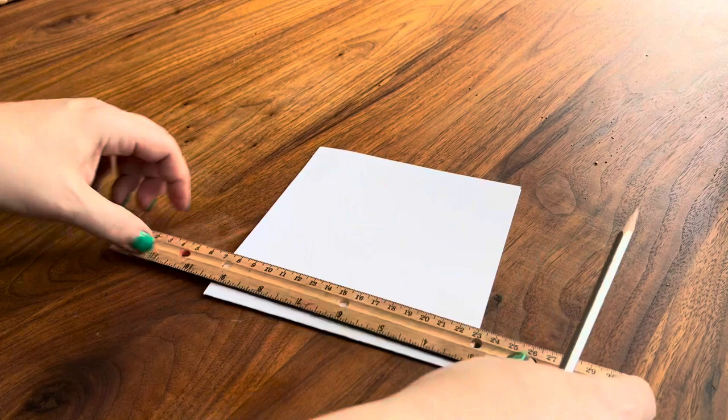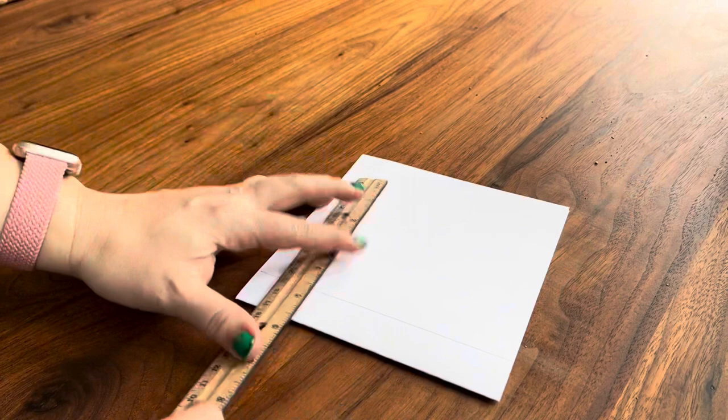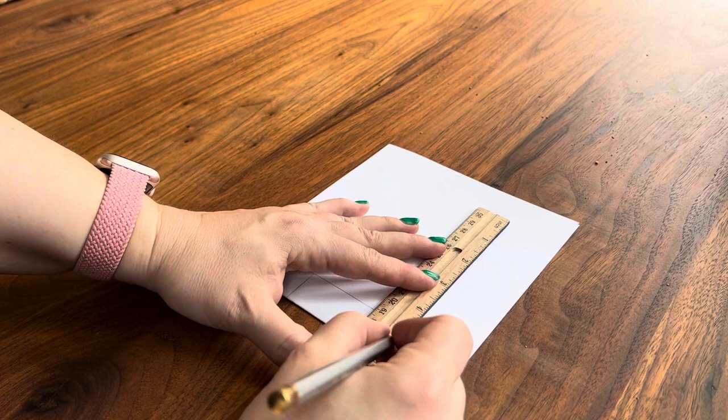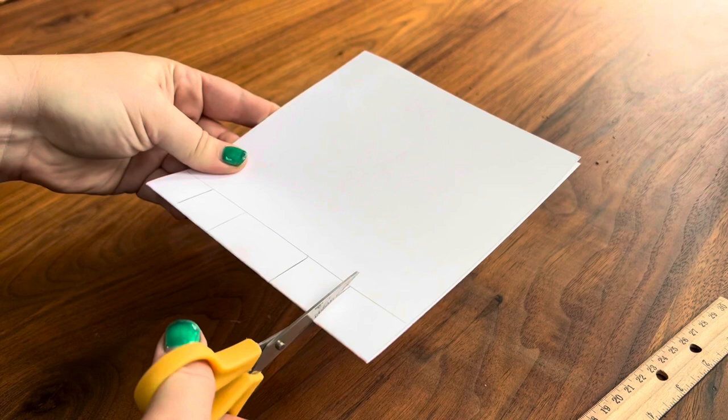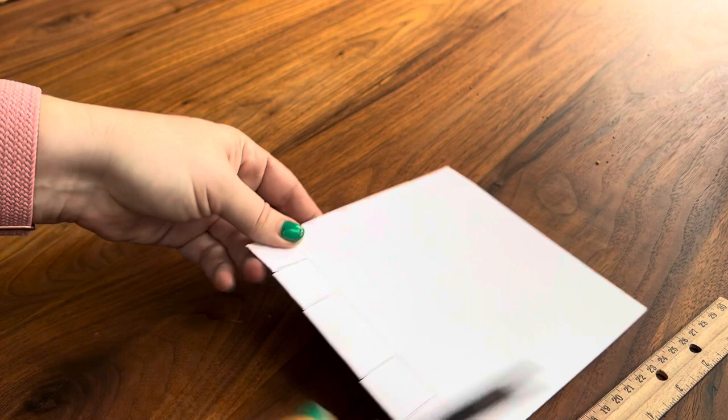Next, you will use a ruler to draw a stop line out from the edge. You can also use the ruler to draw both sides of what will become a tab. I will use scissors to cut those lines up until I hit the stop line.